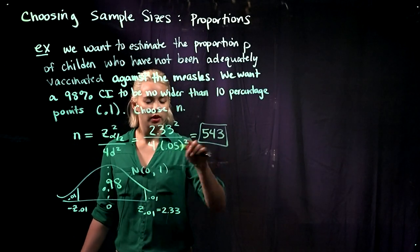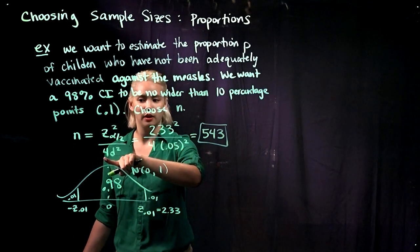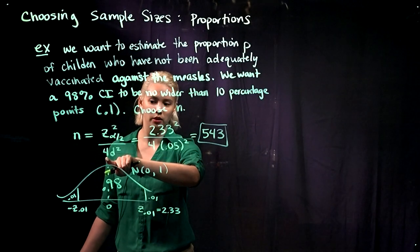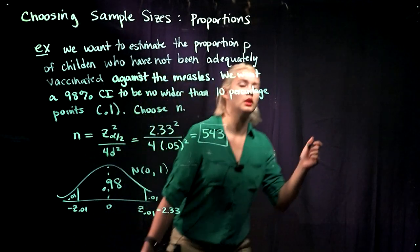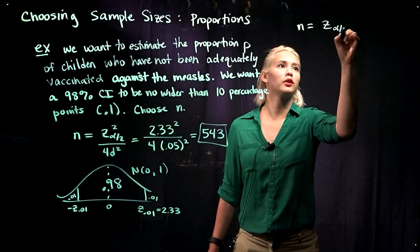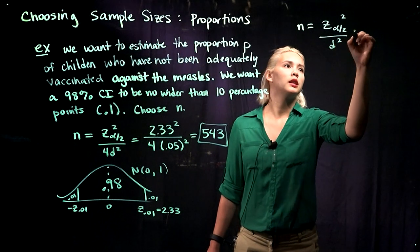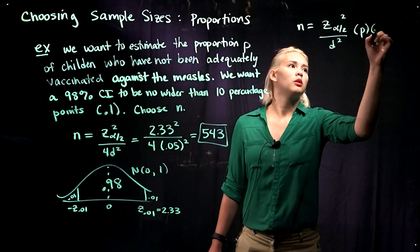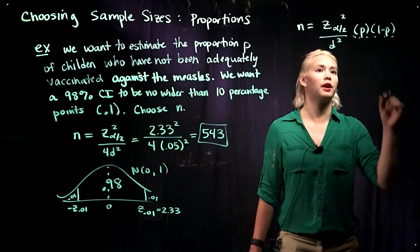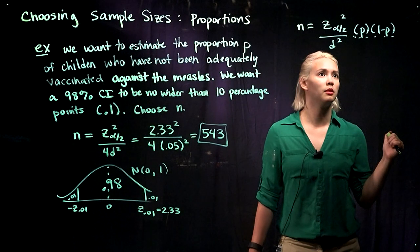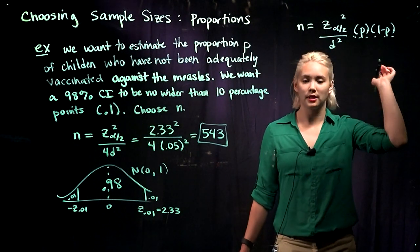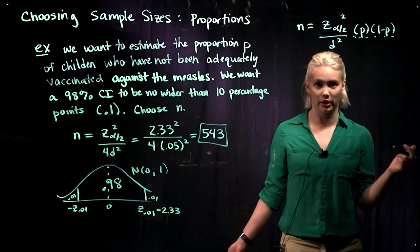We talked about how this 4 is based on p times 1 minus p of .5. Before we had n equals z alpha over 2 squared divided by d squared times p times 1 minus p. Remember we said worst case scenario, p is .5, and so p times 1 minus p would be .25, which is how we got the 4 down here. But sometimes we don't need to work with the worst case scenario information.